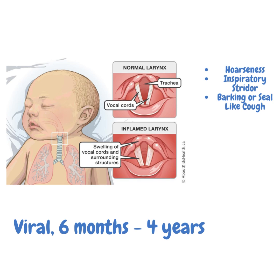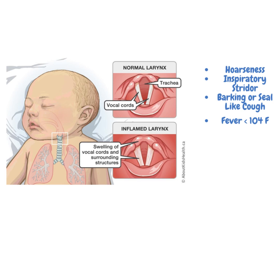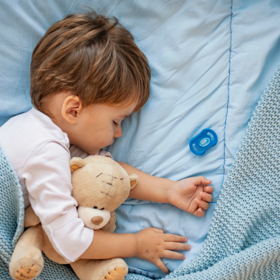Croup is usually viral in nature and occurs between six months and four years of age. These kids usually have hoarseness when they talk. They have inspiratory stridor — a musical high-pitched sound coming from their upper airway when they breathe in. They have a characteristic barking or seal-like cough, and typically a fever of less than 104 degrees.